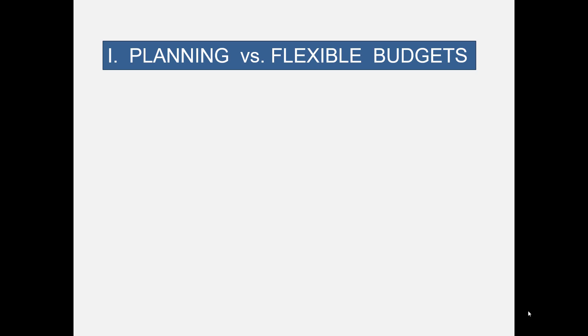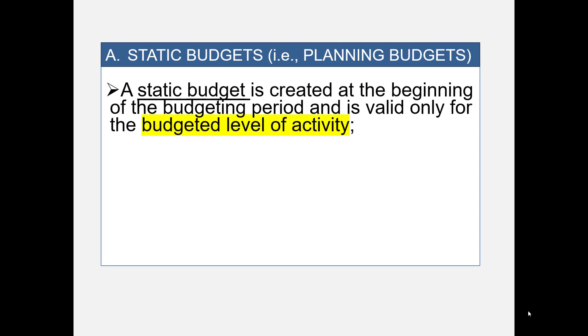Let's take a look at flexible budgets and compare them to static or planning budgets. Static or planning budgets are the budgets we looked at in our budgeting chapter. They're created at the beginning of the period and are only valid for one level of activity. So if management projected that sales would be 10,000 units, a planning budget would be prepared based on that one level of activity.